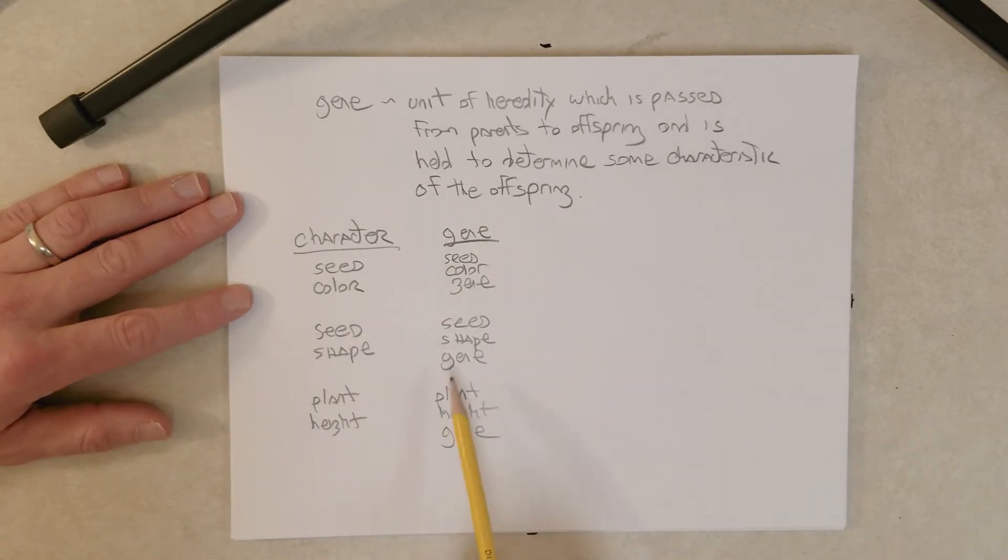And there may be other genes involved, but the ones we're going to focus on: one for seed color, one for seed shape, one for plant height. And they don't have specific names, or maybe they do now, but we don't need to know what those names are.